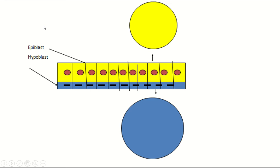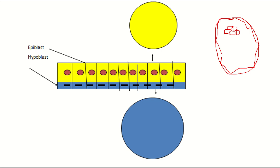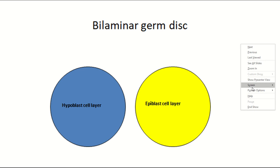Within the blastocyst, this group of cells is known as the inner cell mass, and the outer layer is known as the outer cell mass. The inner cell mass is also known as the embryoblast. It produces two layers of cells: the epiblast and the hypoblast. This two-layered structure is known as the bilaminar germ disc — this is the hypoblast and this is the epiblast.